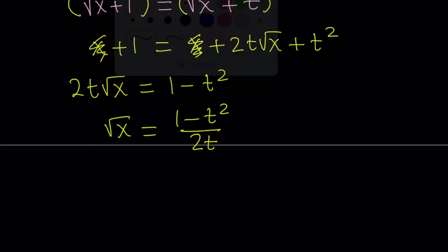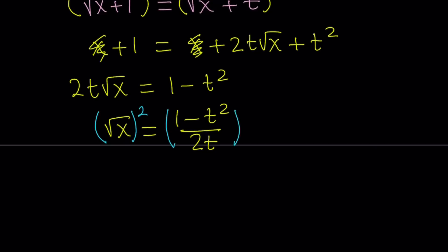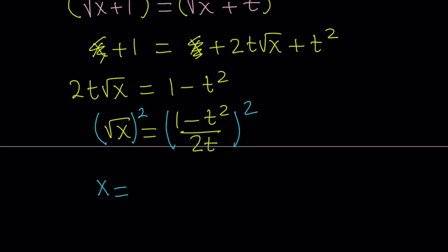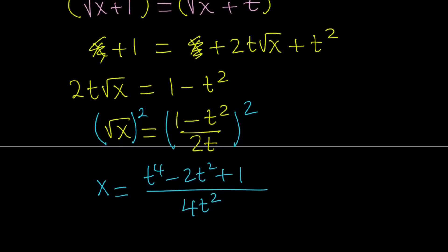We do a lot of squaring here. This gives us x equals the numerator squared over the denominator squared. Squaring the numerator gives t to the fourth minus 2t squared plus 1, and the denominator is 4t squared. So x equals (t⁴ − 2t² + 1) / (4t²).